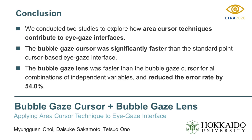Results indicated that the bubble gaze cursor was significantly faster than the standard point cursor-based eye gaze interface. The bubble gaze lens was faster than the bubble gaze cursor for all combinations of independent variables and reduced the error rate by 54.0%.